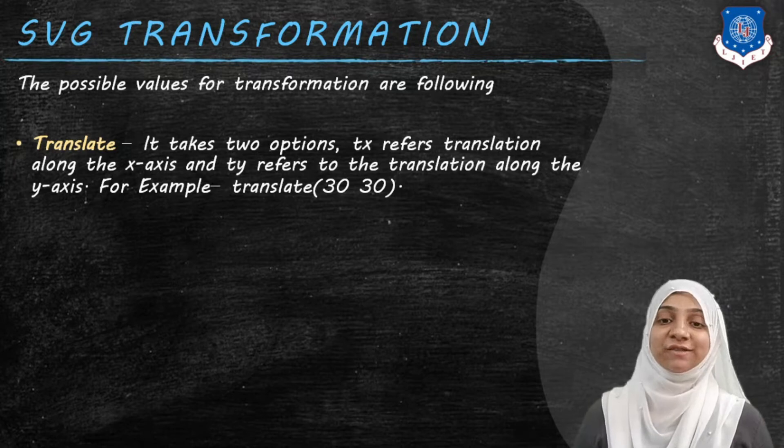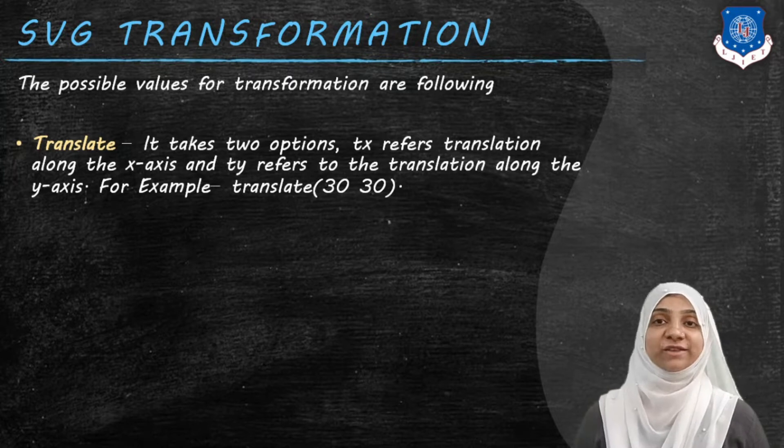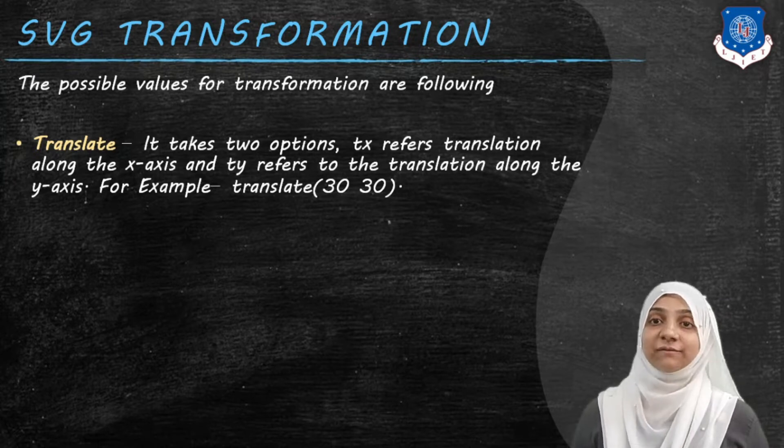First type of transformation is translate. Translation is nothing but mapping your elements from one coordinate to another coordinate of web page. Translate takes two options. Tx, which refers to the translation along x-axis, that is the displacement of an object along x-direction. Whereas, Ty refers to the translation along y-axis, which is nothing but displacement along y-direction or vertical direction.